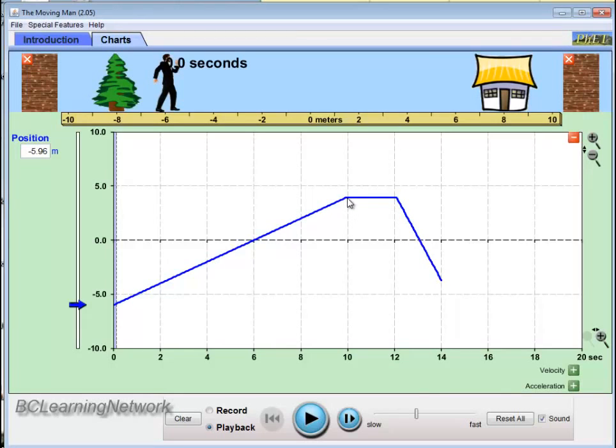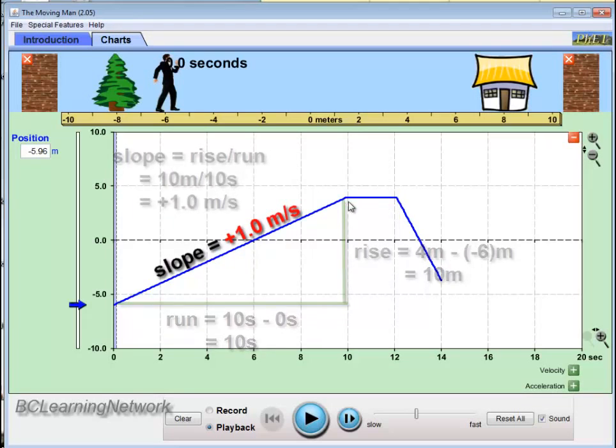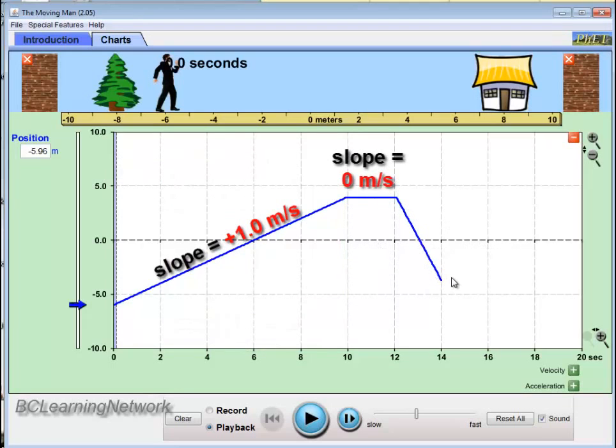In the first region, the rise goes from 4 meters down to negative 6, so our rise would be 10 meters. And our run is 10 seconds, making the slope 10 divided by 10, 1 meter per second is the speed or the velocity in that region, positive 1. The second region we already know is 0. That was easy. And in our last region, we go from 4 meters down to negative 4 meters. So our rise is 8, and our run is 2. 8 divided by 2 is 4, and we know it's a negative velocity. So negative 4 would be my final velocity.